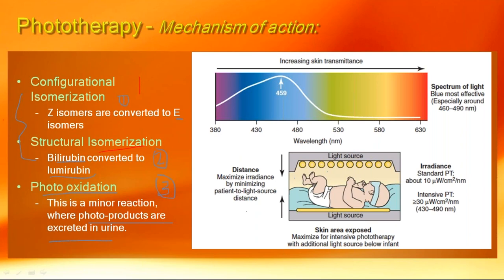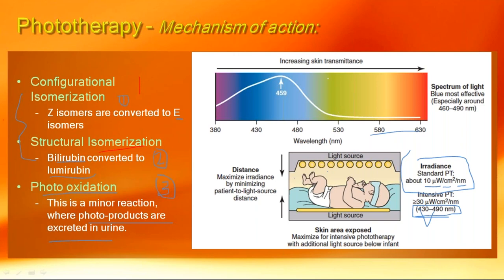For phototherapy setup, the naked baby is placed under the light source. Irradiance is the critical parameter — it should be 10 to 30 microwatts per square centimeter per nanometer, within the wavelength of 430–490 nm (peak efficacy 460–490 nm). The light source is kept approximately 30–40 cm from the body. Modern options include CFL tubes and LED blankets that can cover the baby directly. Exposure may be continuous or intermittent; monitoring is essential.